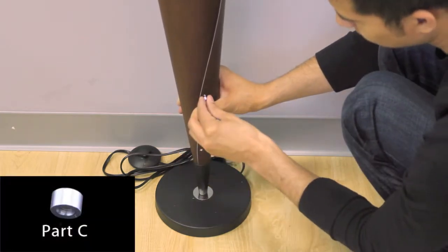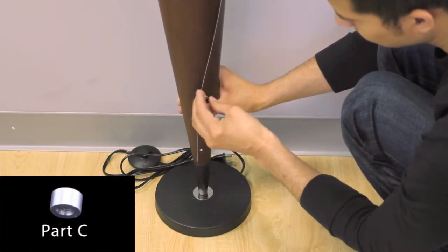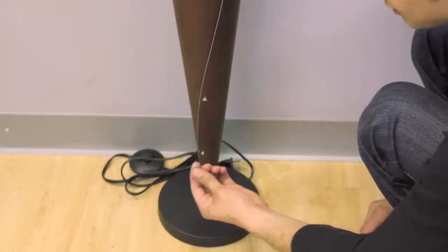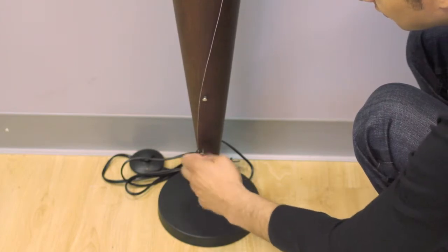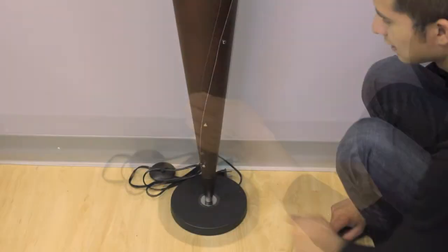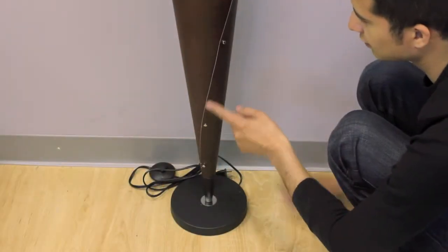Now take Part C and thread the cap onto the protruding screws. One, two, three.